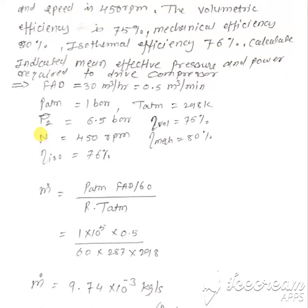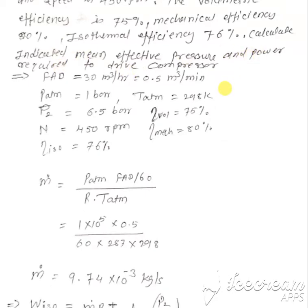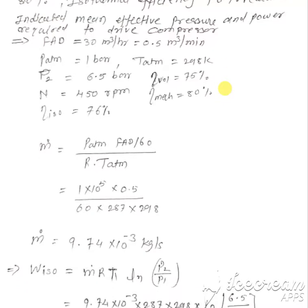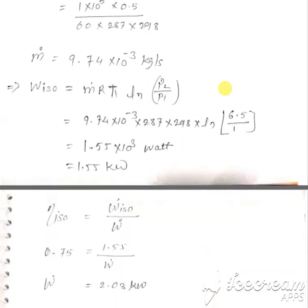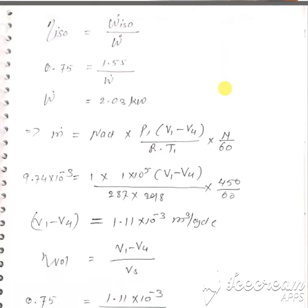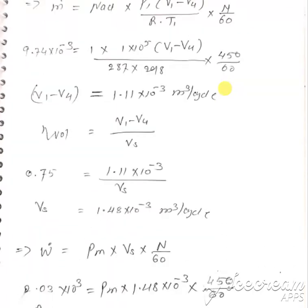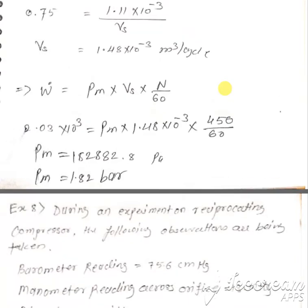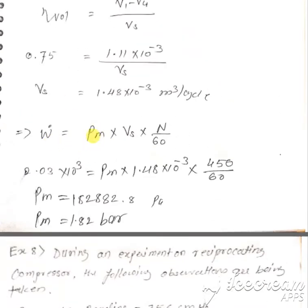In this problem, we have to calculate indicated mean effective pressure and power required to drive the compressor. From the last lecture, the formula for power when mean effective pressure is given is: W-dot = Pm × Vs × N / 60. We have to calculate Pm, so first we need to calculate W-dot; Vs and N are given.